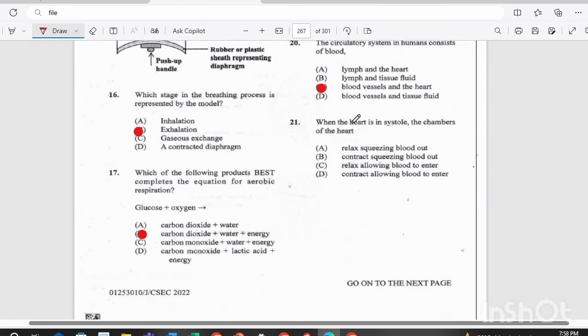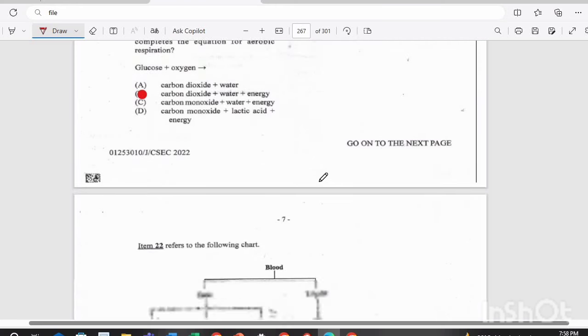Question 21. When the heart is in systole, the chambers of the heart, A, relax by squeezing blood out, B, contract by squeezing blood out, C, relax allowing blood to enter, or D, contract allowing blood to enter? The answer there is B, contract squeezing blood out.